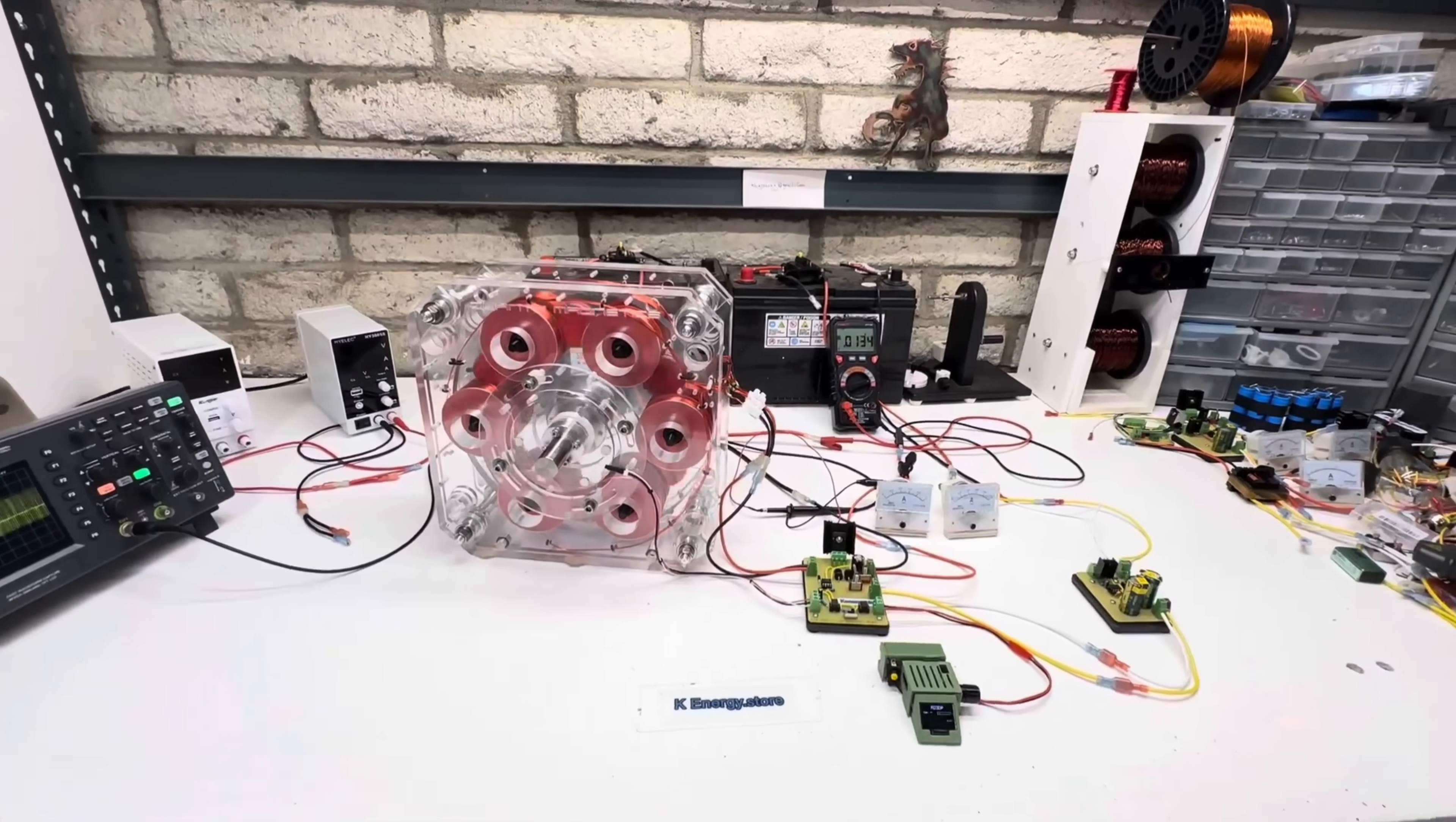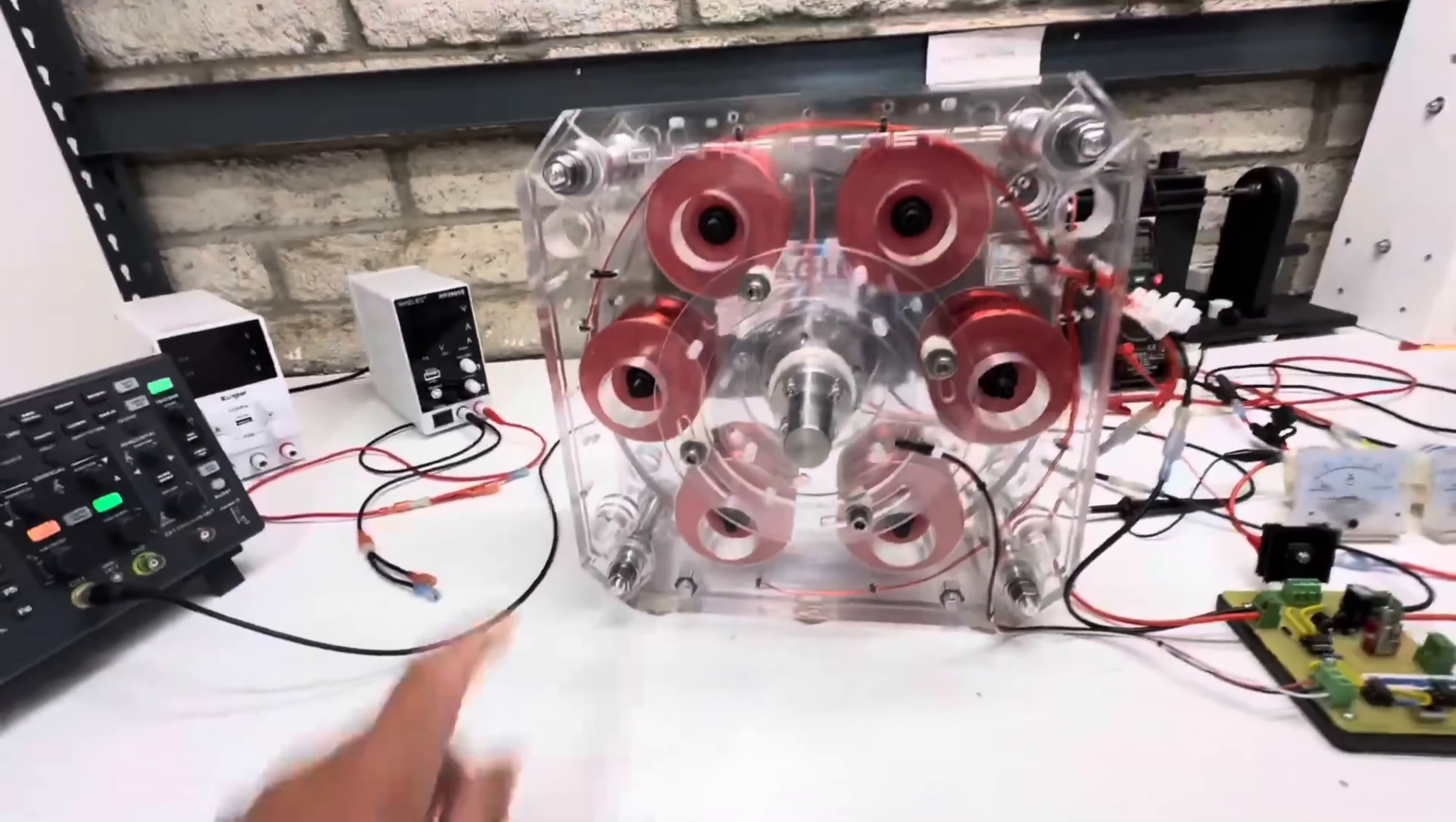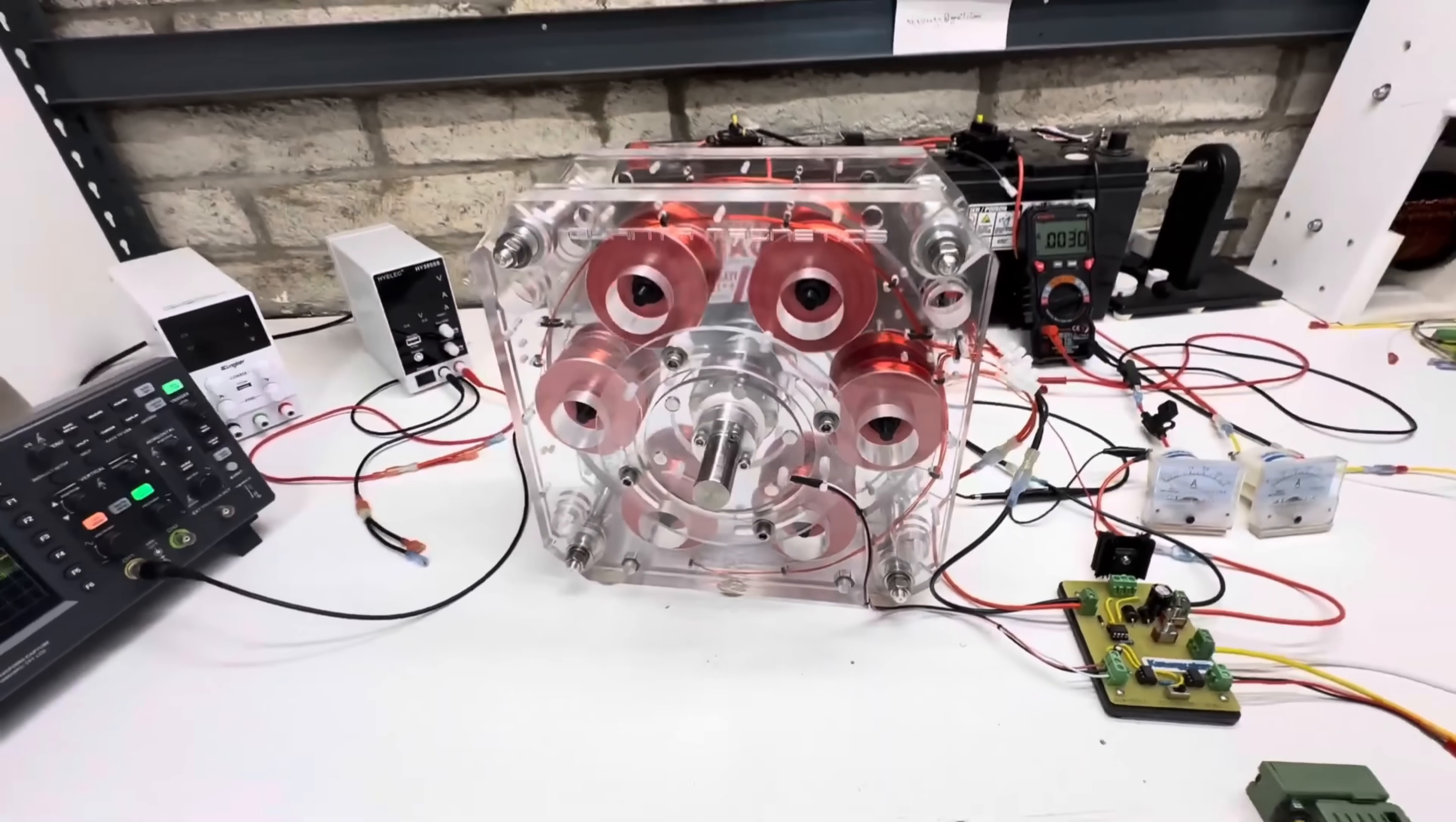By 2020, Quantum Magnetics had become a household name, with thousands of their generators installed in homes, businesses, and even some local power grids across the country. The company's founders were hailed as visionary pioneers, poised to disrupt the entire energy industry and usher in a new era of clean, abundant power. As Quantum Magnetics continued to grow, the company set its sights on large-scale manufacturing and distribution. To meet the overwhelming demand for their generators, they poured resources into expanding their production facilities, hiring hundreds of workers, and developing ever more advanced models to keep up with the market's insatiable appetite.